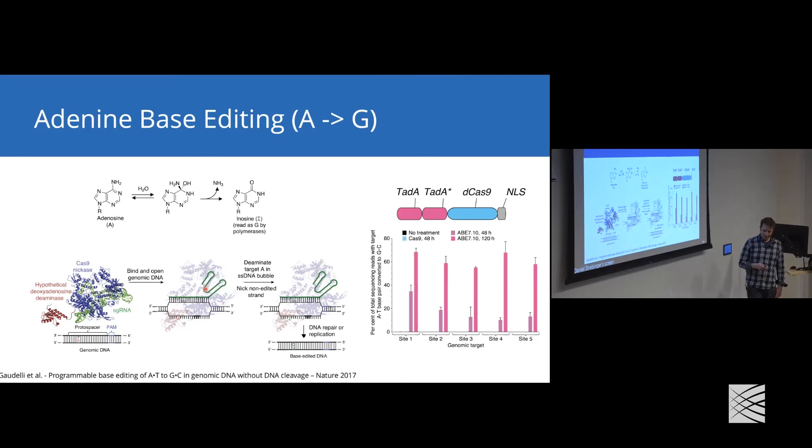However, there aren't many adenosine deaminases known to act on DNA. The Liu lab figured out that TadA from E. coli, which is a tRNA adenosine deaminase, can actually act on DNA. Usually TadA acts as a dimer, so by fusing two TadA domains in tandem onto a Cas9 nickase or a dead Cas9, you can introduce very specific base editing in the targeting region.